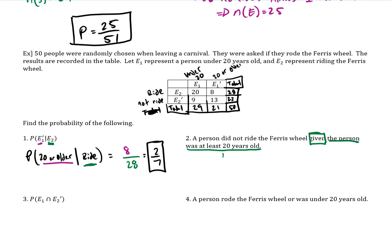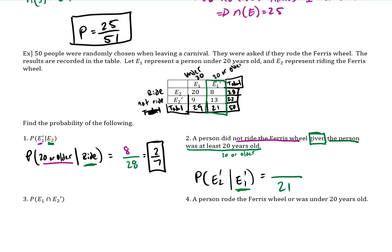If I wanted to, I could write this using their notation: a person did not ride the Ferris wheel is not E2, given the person was 20 or older is not E1. So we need the not E1 as our sample space — the total is 21, so that's the denominator. And then in that column, I'm looking at not E2 — the people that did not ride the Ferris wheel — which is 13. So 13 out of 21 does not reduce, and that's our final answer.